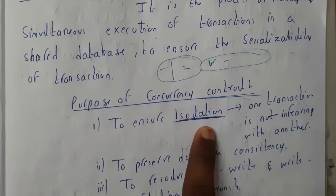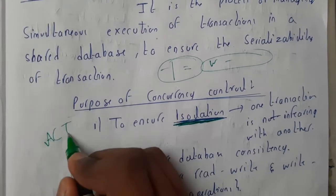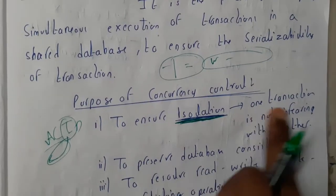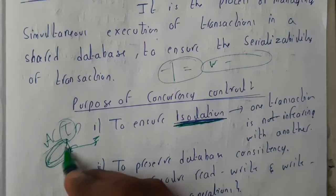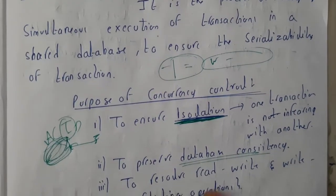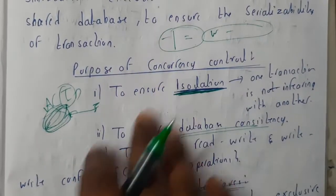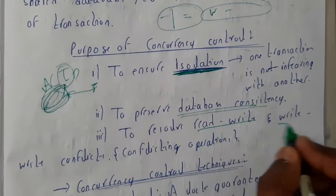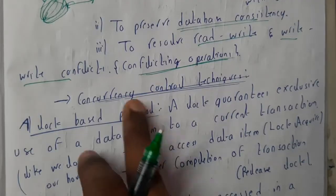There are three main reasons why we do this. First, to ensure isolation — isolation means hiding what a transaction is doing so one transaction is not interfering with another. Second, to preserve database consistency, since parallel execution can cause inconsistent issues. Third, to resolve conflicts such as read-write conflicts and write-write conflicts.